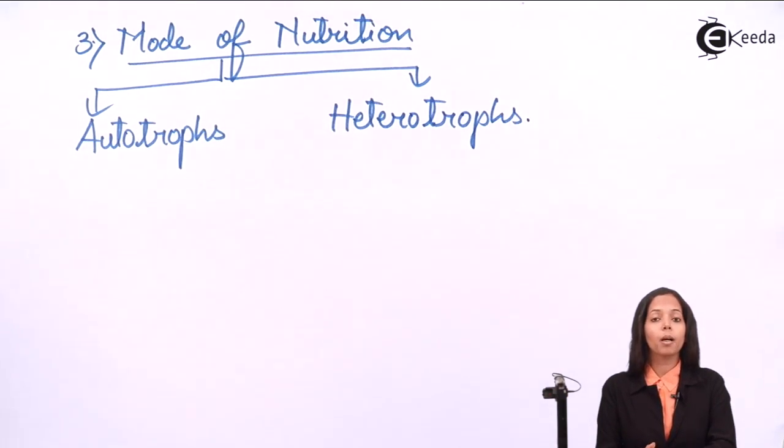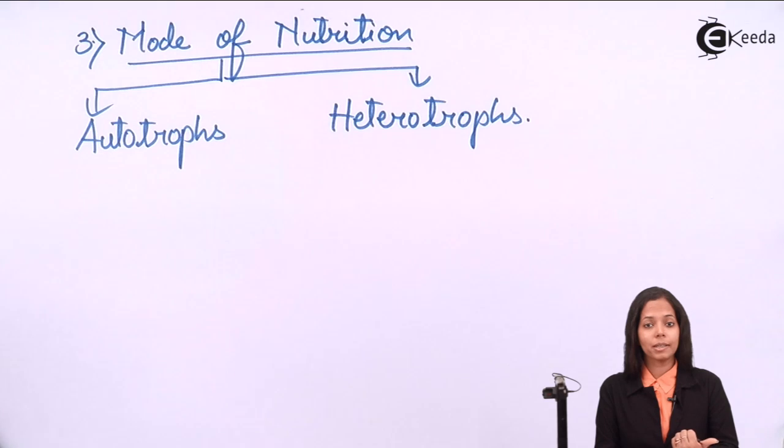Speaking about autotrophs, auto means self, trophs means dependent. So autotrophic means self-dependent. Heterotrophic means dependent on other. In case of autotrophic, there can be two procedures: one is photosynthesis and second is chemosynthesis. Speaking about photosynthesis, in this case light is the important factor. Speaking about chemosynthesis, in this case specific chemicals are the important factor for making food.